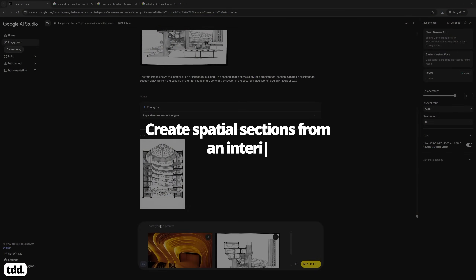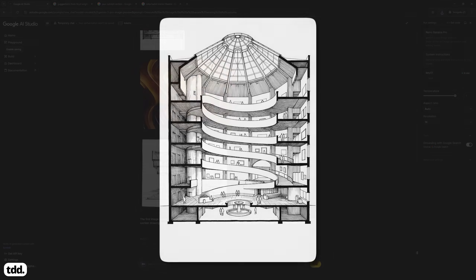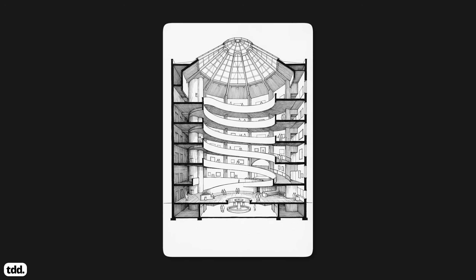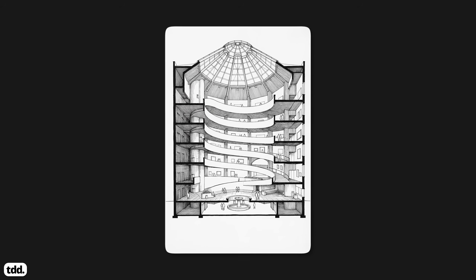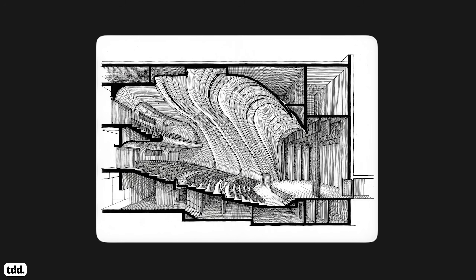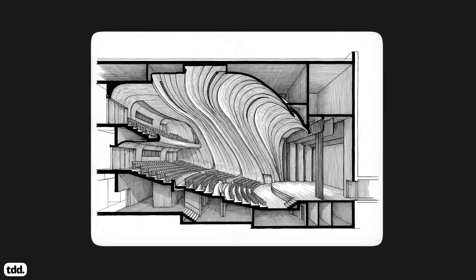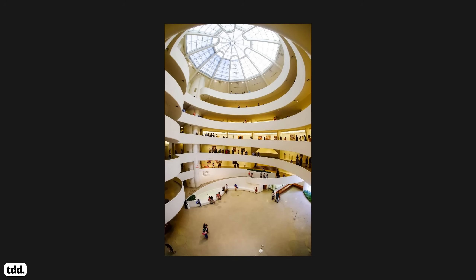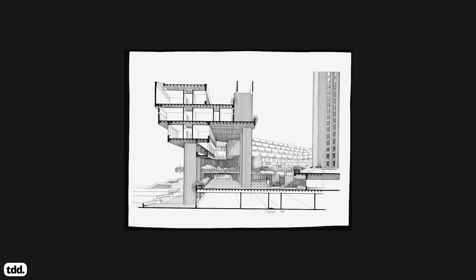After your site analysis, you'll move to concept design and there are some great ways you can use Nano Banana Pro to develop your concept. Workflow number five: create spatial sections from an interior photograph. Nano Banana Pro lets us create sections from a photograph of an architectural building. In concept design, this could be a great way to better understand the spatial quality of some of our precedent images and how they relate to their surrounding spaces. Let's create a section from this photograph of the Guggenheim by Frank Lloyd Wright in the style of the spatial sections created by Paul Rudolph, who creates amazingly detailed section drawings that tell you an incredible amount about the spatial qualities of interior buildings.